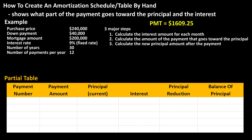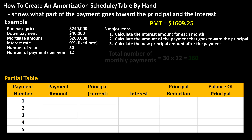For the first column — payment number — this is going to be 1, 2, 3, and so on, all the way to 360, the total number of payments, because there are 30 years and 12 payments per year, which is 360 total payments.